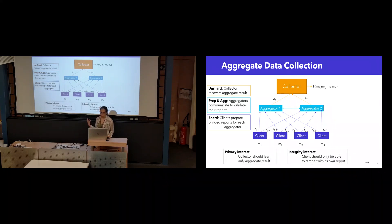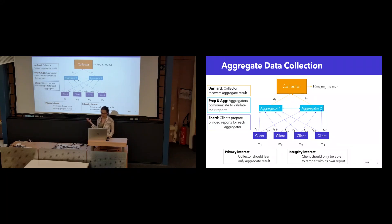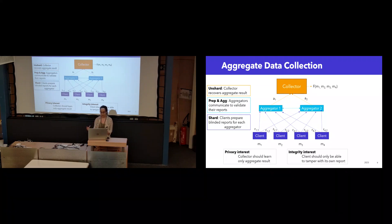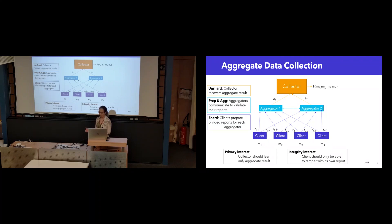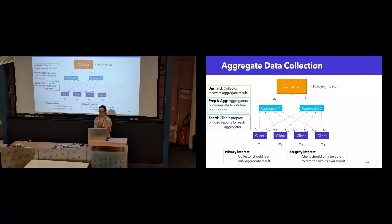So what we expect from a verifiable distributed aggregation function is the same two properties I've been discussing. Privacy, where the collector should only learn the aggregate result and not anything more about each client's individual measurement. And integrity, where clients can lie about their own reports, but only as long as they're well formatted and they shouldn't be able to poison the final result. And we actually refer to integrity as robustness in our paper.